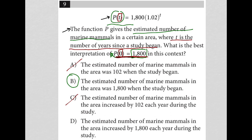Choice D, the estimated number of marine mammals in the area increased by 1800 each year. Note, the 1800 is a fixed number based upon what the number of marine mammals were at the start of the experiment. So I am pretty satisfied that choice B is the correct answer.